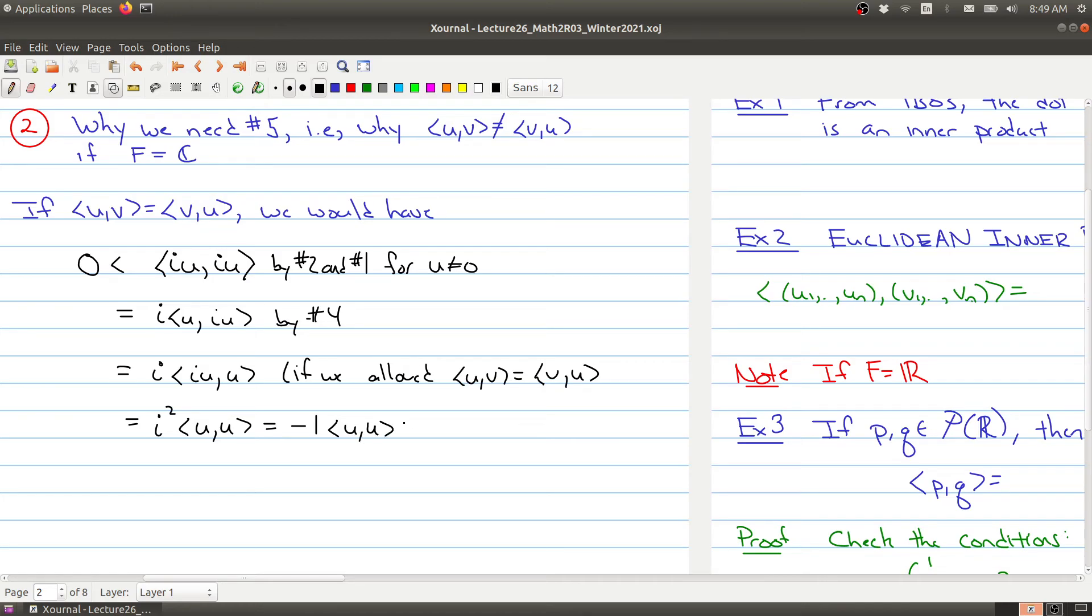And then the inner product of u with itself. And so this has to be strictly less than zero. And the reason is because this inner product of u with itself is positive, but we're multiplying it by minus one. So look at what we have. Zero is strictly less than zero. So this is a contradiction.